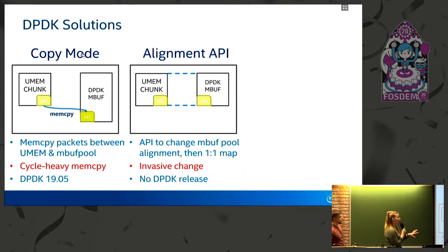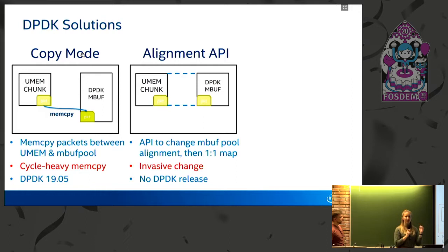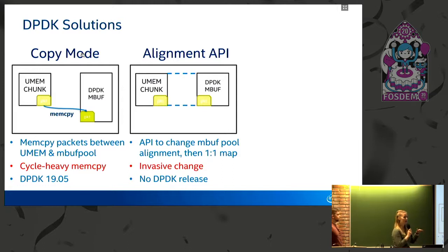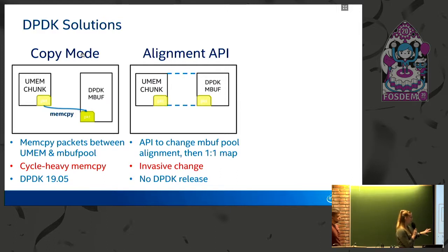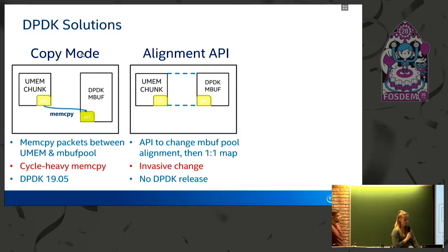The second approach was an alignment API: a new API in DPDK that allowed you to specify the type of alignment for your mbuf pool, so any application wanting to work with AF_XDP could use this new API to mold its mbuf pool to fit the umem requirements, enabling one-to-one mapping and zero-copy performance. Even though this gave really good performance, it was deemed too invasive — you had to change your application to get it to work — which went against the goal of apps working out of the box, so it didn't make it into a DPDK release.